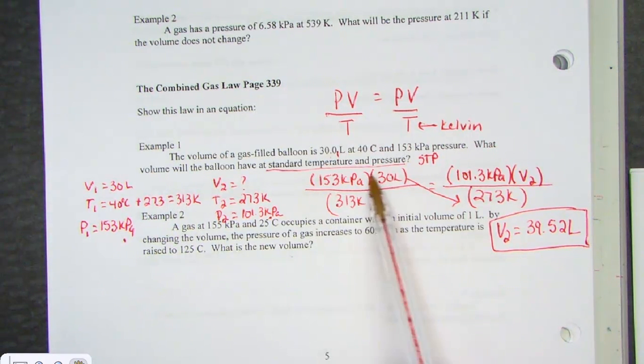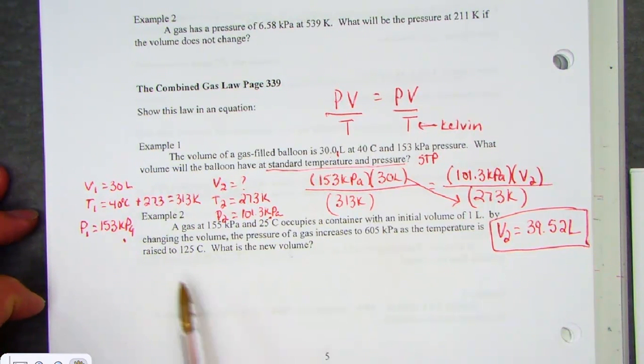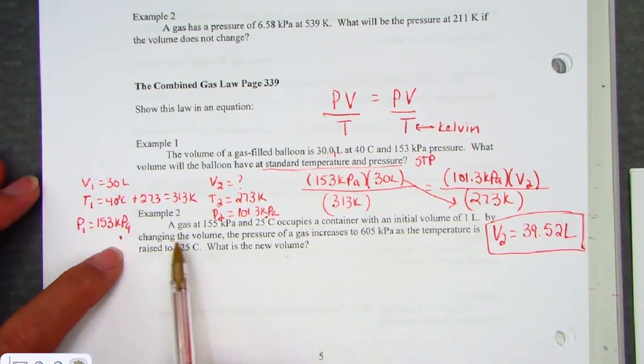Given five of the six variables, we simply cross-multiply, pulling out for our missing variable. Looks like example 2 will be very similar.